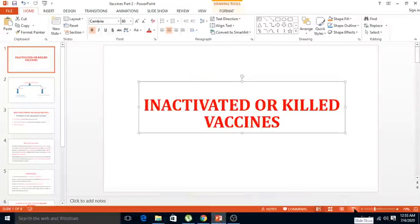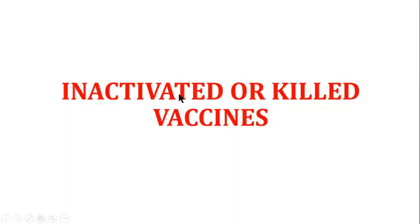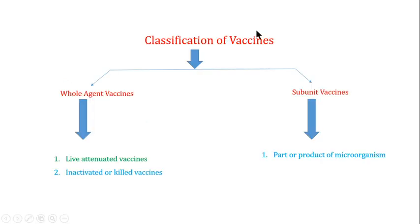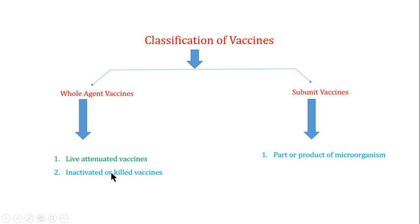Welcome back to this next video. In this video we are going to talk about the inactivated or killed vaccines. Before going into the inactivated or killed vaccines, let us talk about the classification of the vaccines. Vaccines are broadly divided into two classes: the whole agent vaccines and the subunit vaccines. In the whole agent vaccines, the live attenuated vaccines and the inactivated or killed vaccines are included.